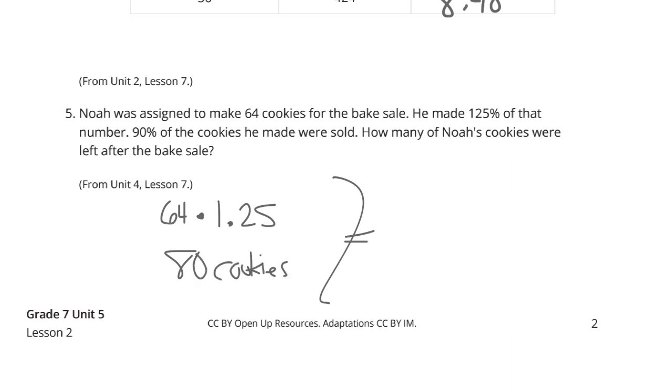Then, 90% of the cookies he made were sold. How many were left? Well, if 90% were sold, that would mean 10% were left. And if I take my 80 cookies and multiply it by 10%, we're going to get 8 cookies left.